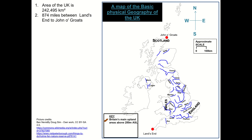If you measure the distance between John O'Groats and Land's End — those are the two most extreme points north to south on the Great Britain mainland — the distance is eight hundred and seventy four miles. We have six thousand islands within the United Kingdom, with only one hundred and thirty six of those inhabited.